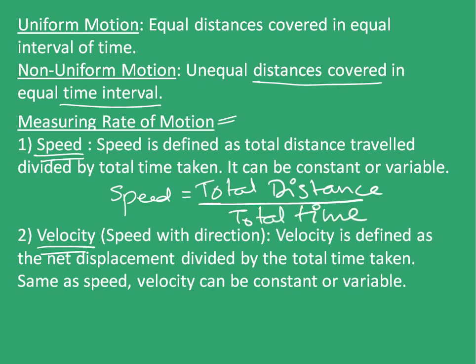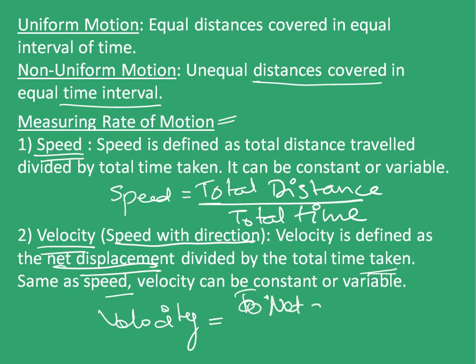Similarly, velocity is speed with direction. Velocity is defined as the net displacement divided by the total time taken. Same as speed, velocity can be constant or variable. So velocity is equal to net displacement divided by total time.